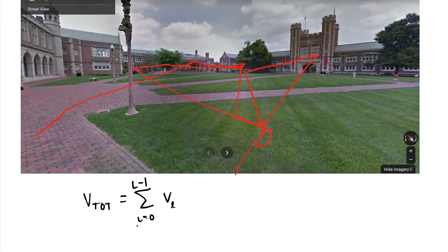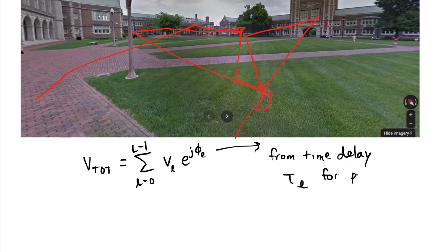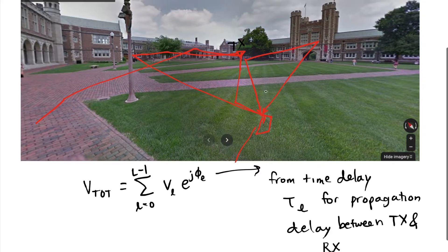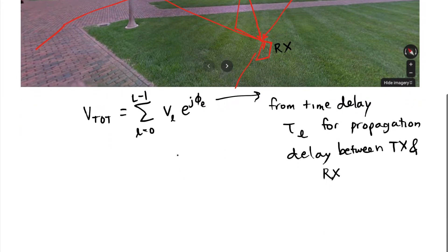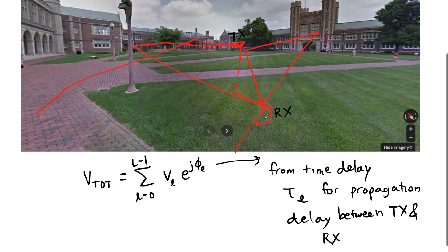Each one contributes some amplitude and some phase. The phase comes from the time delay between transmission and reception. We call that time delay tau sub l, or the propagation between the transmitter and receiver. That time delay is a function of the distance between the transmitter and receiver because radio signals travel at the speed of light in air.